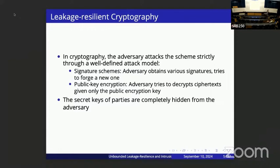In public encryption, the adversary has the public encryption key and tries to learn the secret communication between two parties by looking at ciphertexts. But in all of these models, the adversary has no information about the secret keys of the parties, which the honest parties keep secure.